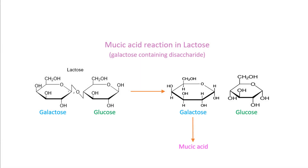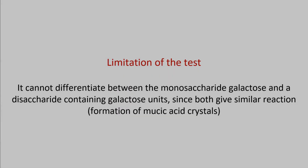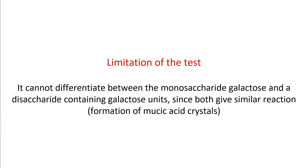Lactose also gives a positive test because nitric acid first hydrolyzes the glycosidic bonds between the glucose and galactose units, after which it oxidizes the free galactose units into dicarboxylic acids. One significant disadvantage of the mucic acid test is that it cannot differentiate between the monosaccharide galactose and a disaccharide which contains galactose units, because it gives the same type of positive result with both types of sugars.